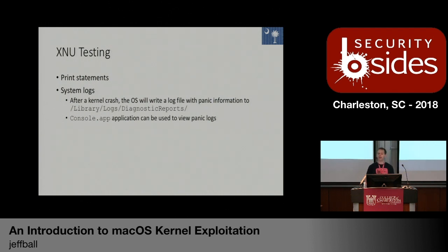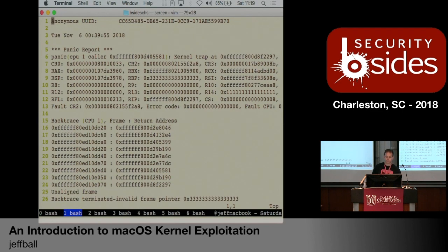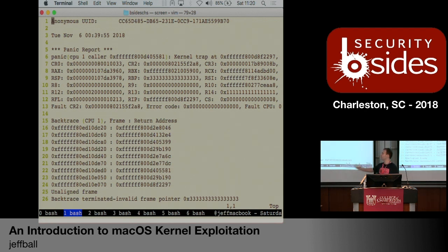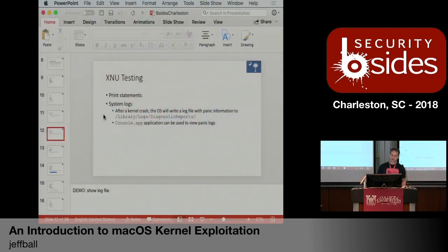If you manage to crash the kernel, you can see output from the panic log dumper. It will dump all of the registers and give you a stack trace. If you're trying to figure out what happened, you can check what value is in the RAX register. In the stack trace shown here, I was overwriting the stack with a nonsense value, so it failed to walk all the way back up the stack — you can see the frame pointer is just 3, 3, 3. Again, useful but not the most helpful tool.